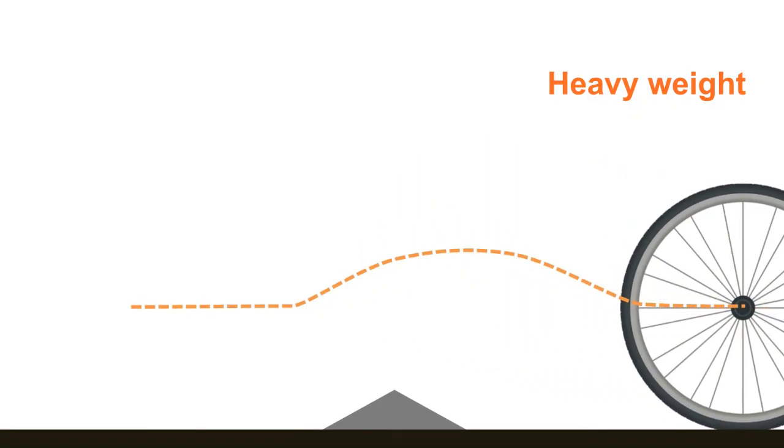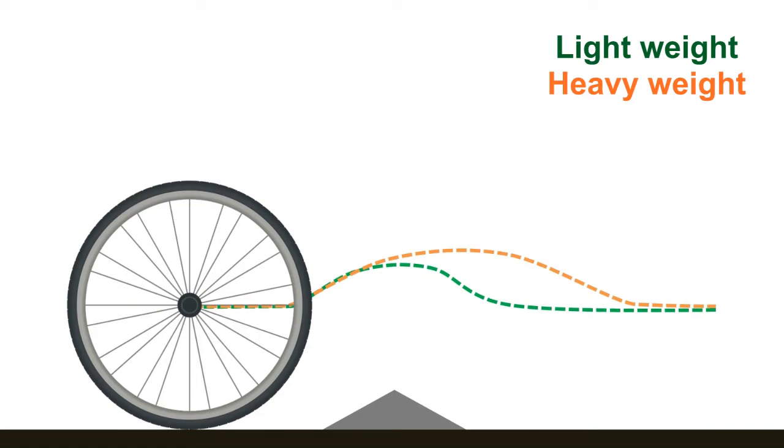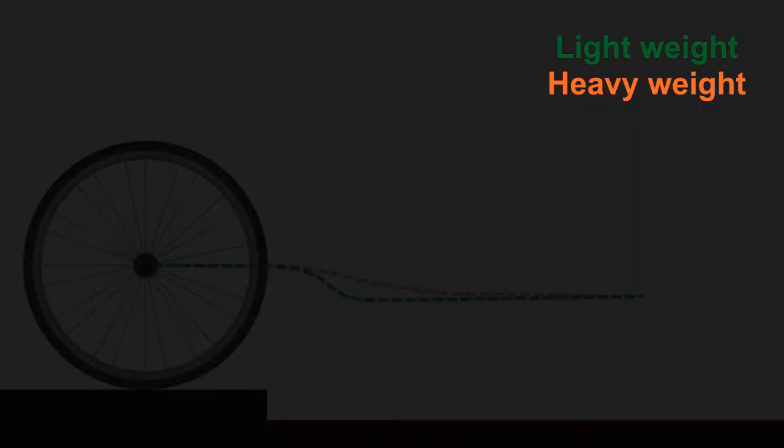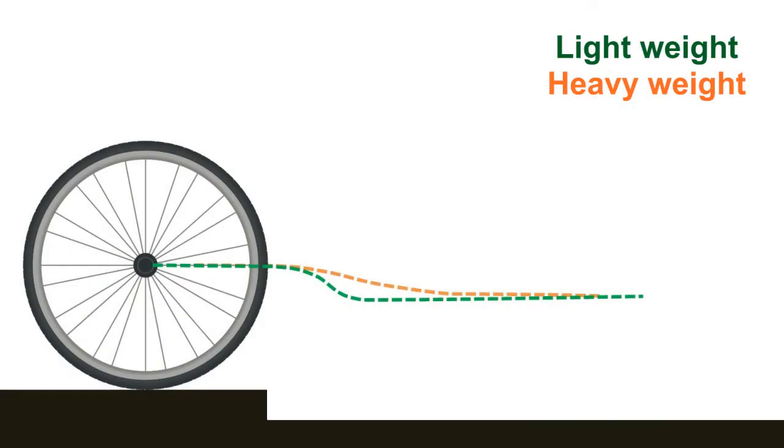So when the wheel hits the bump, it continues to move up after passing over the bump crest. So comparing the boat trajectories, you can see that with the lighter wheel it remains more time in contact with the ground, so it provides more traction.